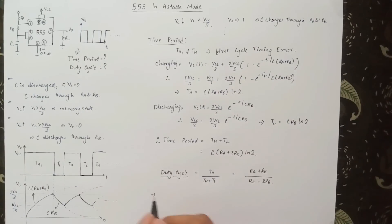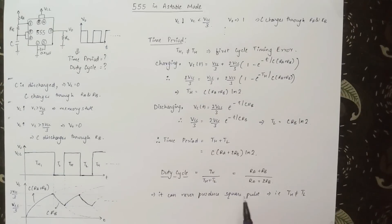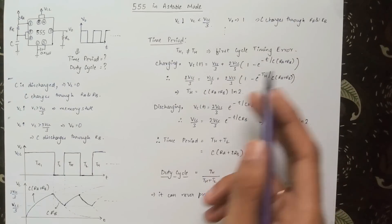As this circuit has different charging and discharging times, the output of this circuit can never be a perfectly square pulse. This completes the second tutorial of this series. In the next tutorial, we will be talking about the 555 in its monostable mode. Thank you.